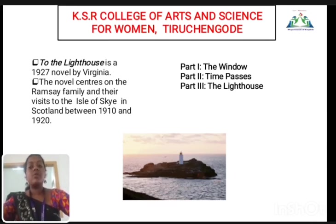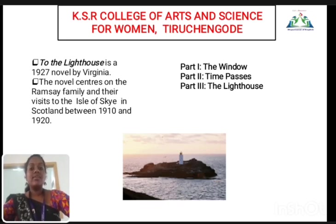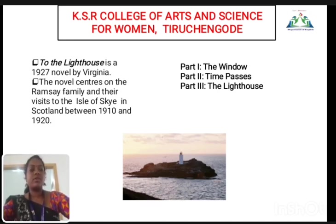In the first part, Professor Ramsay and his wife with their eight children and assorted guests are enjoying a long summer. They have promised to take their youngest son James to the lighthouse. As the father predicts unsuitable weather conditions, the journey is postponed, and the children feel very unhappy because their father had said they would go — but the situation and weather conditions were not good.